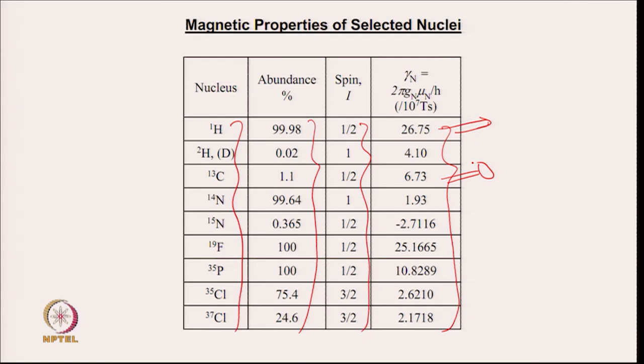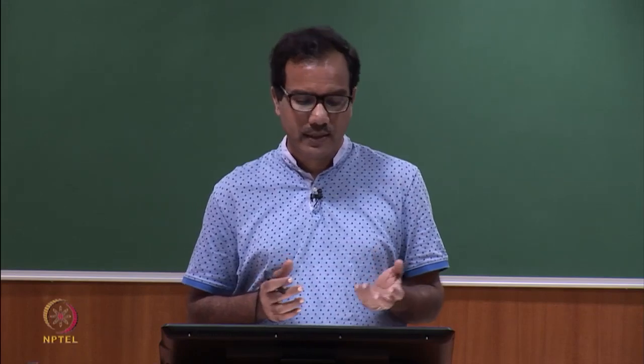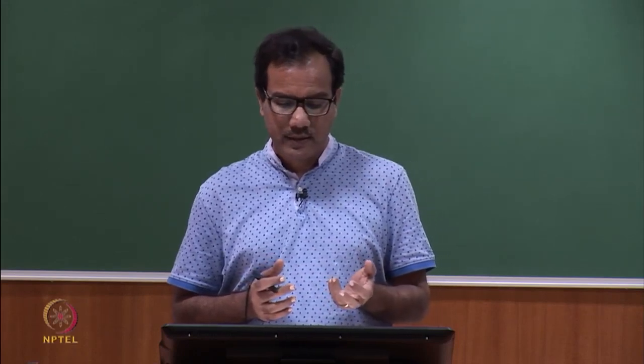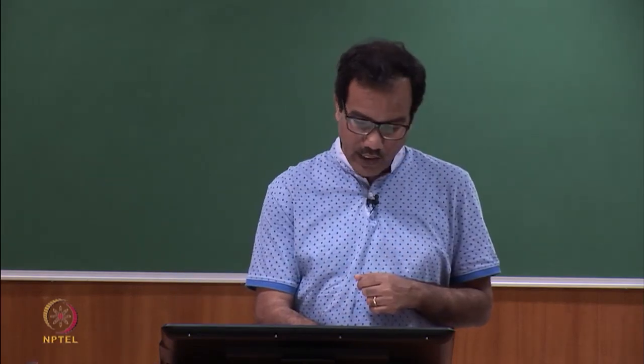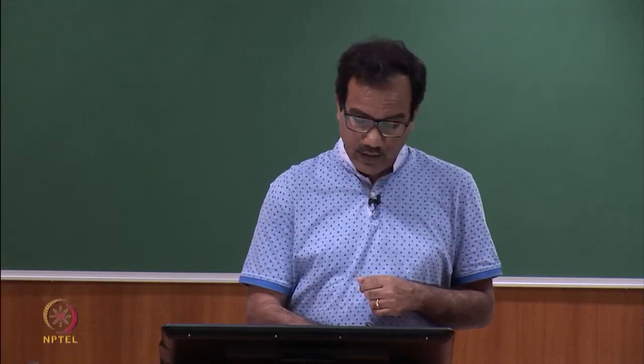One thing you will notice is that the proton has a gyromagnetic ratio of 26.75, and if you look at ¹³C it is 6.73. I will talk about this in the next slide, because I have not yet talked about the magnetic field.